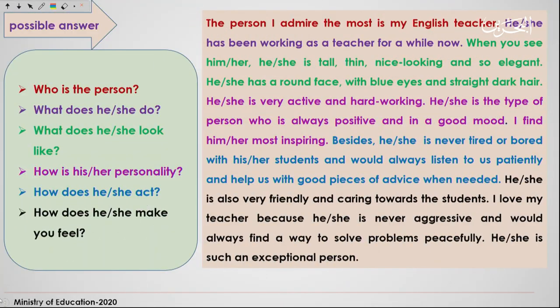Let's check a possible answer. I've used colored questions to match with the answers so it's easier for you to track. The questions are: Who is the person? What does he or she do? What does he or she look like? How is his or her personality? How does he or she act? How does he or she make you feel? Let's read the paragraph together.